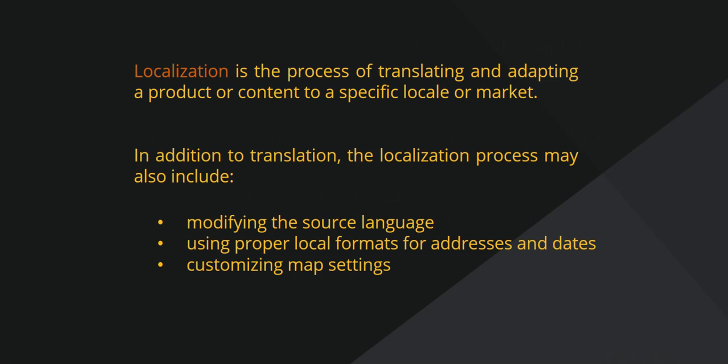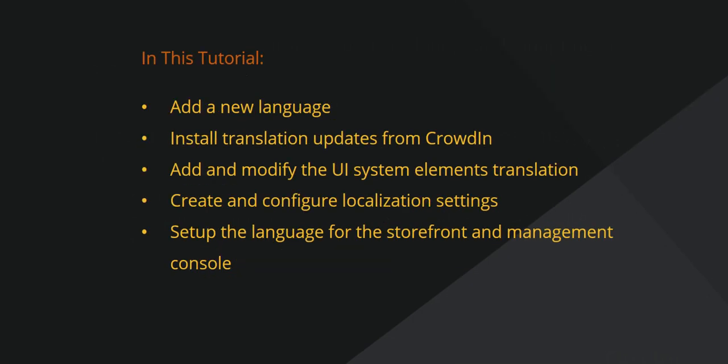With the integration to the CrowdIn translation service, AuraCommerce has live access to the most recent updates from the Aura team and community. In this tutorial, we will demonstrate how to add a new language to the system, import and export the corresponding translation texts, and install translation updates from the CrowdIn project. Additionally, we'll add and modify system element translations, create a new localization and configure its settings on four levels: globally, per organization, per website and per user. We'll also set up the default language for system elements and website content displayed to the user, both in the storefront and in the management console.